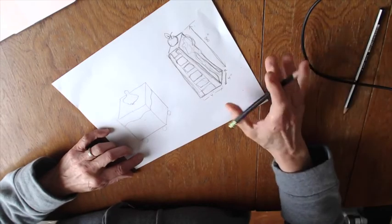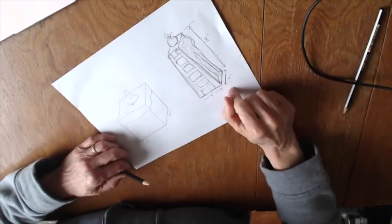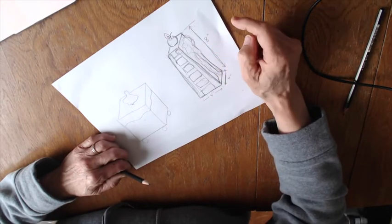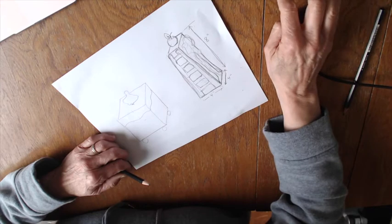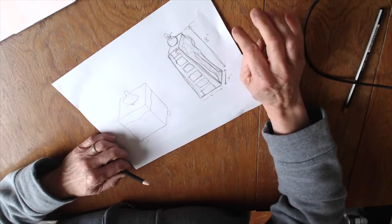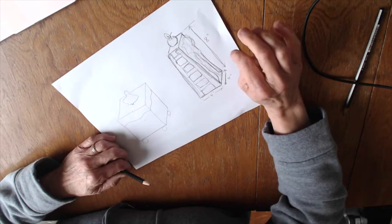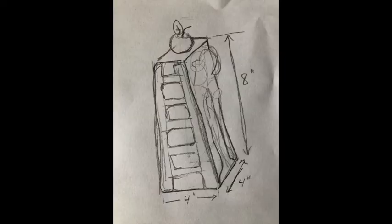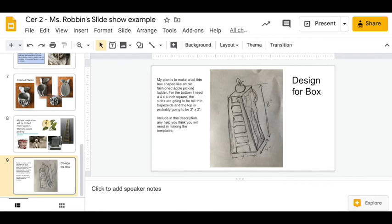And then what you're going to do is take a picture of this and I want you to upload it to slide number eight. And then I want you to add a text box that gives me a little description of what you want to make and whether you're having trouble drawing it, the dimensions, and how you're going to personalize it based on your song. Take a picture of your drawing and put it in slide number eight. Make sure the dimensions are there. You're going to then put a description of how you're going to personalize your box and what help you need.